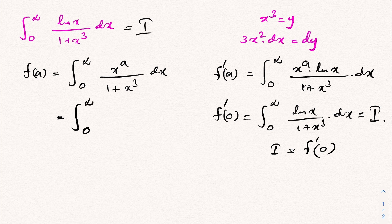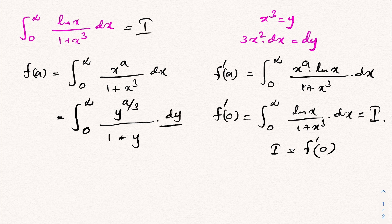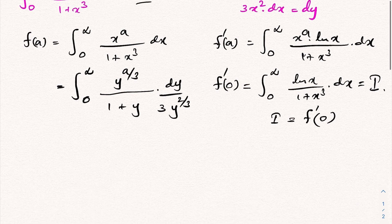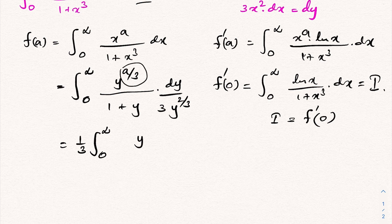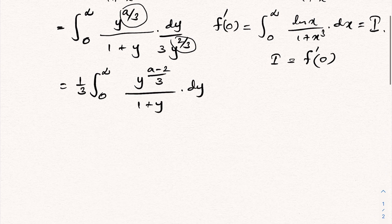Now x to the a becomes y to the a over 3, over 1 plus x cubed which is y, and dx becomes dy over 3 times x squared, where x is y to the 1 over 3, so x squared is y to the 2 over 3. Simplifying, we get 1 over 3 times the integral from 0 to infinity of y to the power (a minus 2) over 3, over 1 plus y, dy.